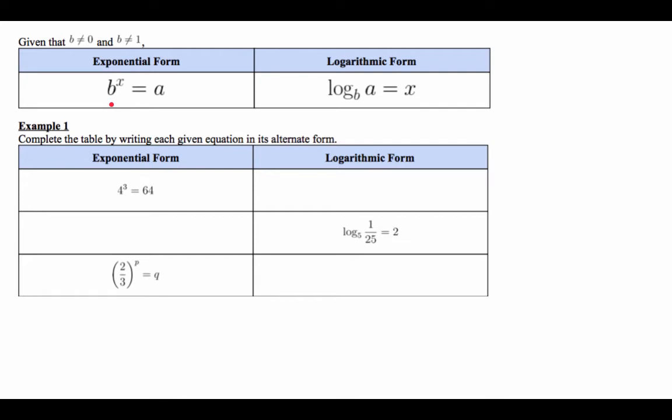So given that, what is the exponential, given the exponential form over here, what is the logarithmic form? So that's base 4. So 3 goes in, then 64 pops out. Then it should be 64 goes in, 3 pops out. Log base 4. So 64 is the input, and 3 is the output.